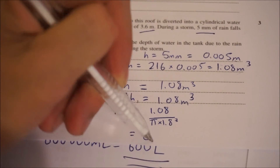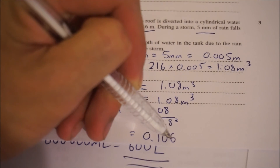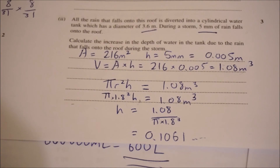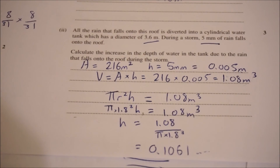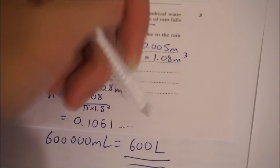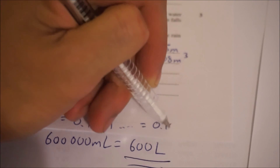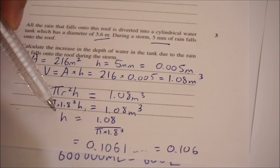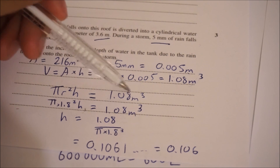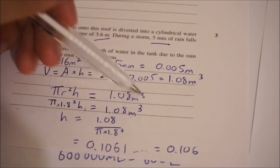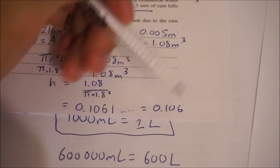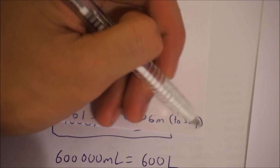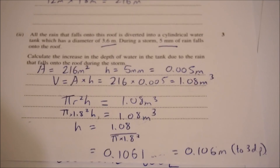Solving that gives 0.1061. Rounding to 3 decimal places, that's 0.106. Remember, we're looking at height, and our units are in meters. So the increase in depth of water in the tank is 0.106 meters. And that's all you have to do.